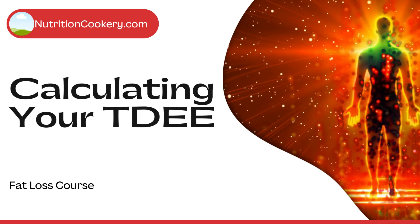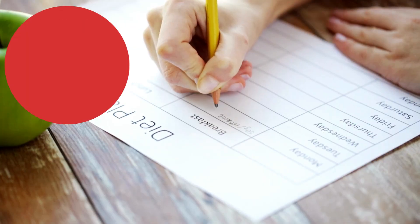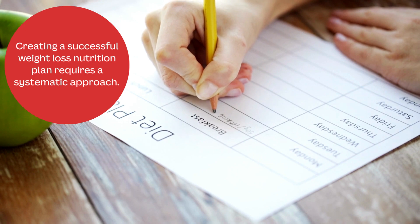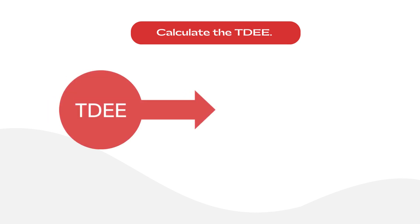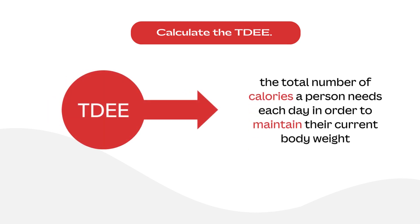Calculating your TDEE. Creating a successful weight loss nutrition plan requires a systematic approach. The first step in this process is to calculate the total daily energy expenditure, shortly TDEE. TDEE represents the total number of calories a person needs to consume each day in order to maintain their current body weight and support all of their physiological functions.